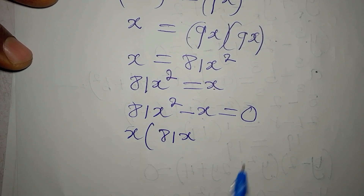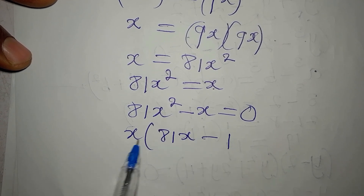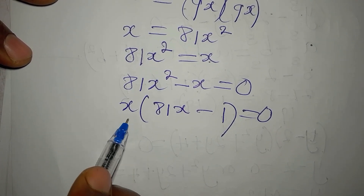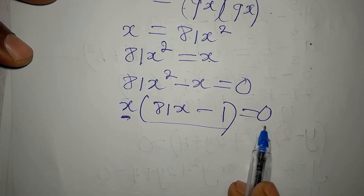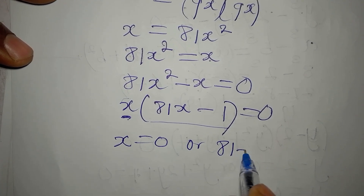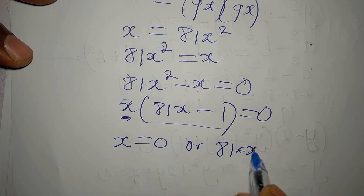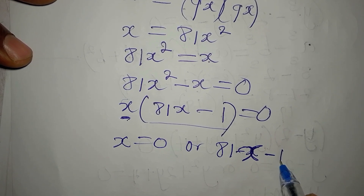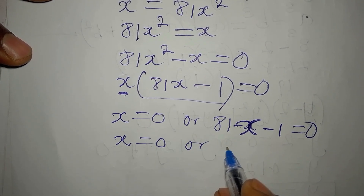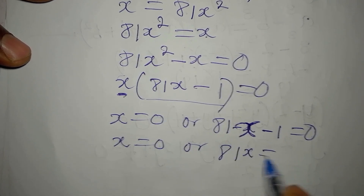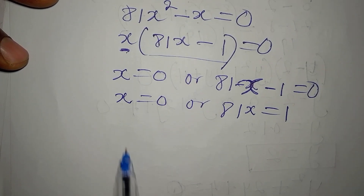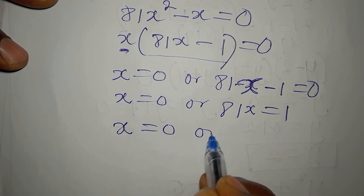Factoring out x gives us x times (81x minus 1) equals zero. So either x equals zero, or 81x minus 1 equals zero. From the second factor, 81x equals 1, so x equals 1 over 81. Our two solutions are x equals zero or x equals 1/81.